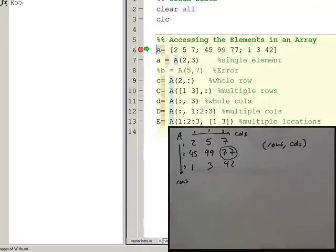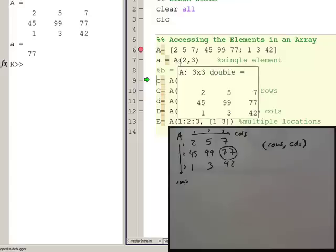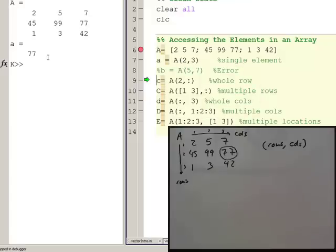Okay, so let's look at this over here in MATLAB. So I execute, there's A defined as we have it on the board, and on line 7, I set variable A equal to array A accessed at row 2, column 3, which gives us 77.